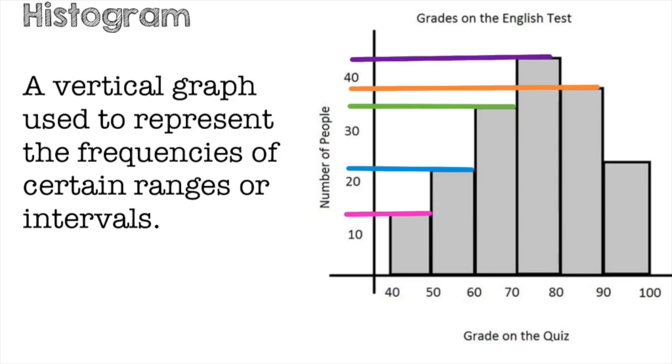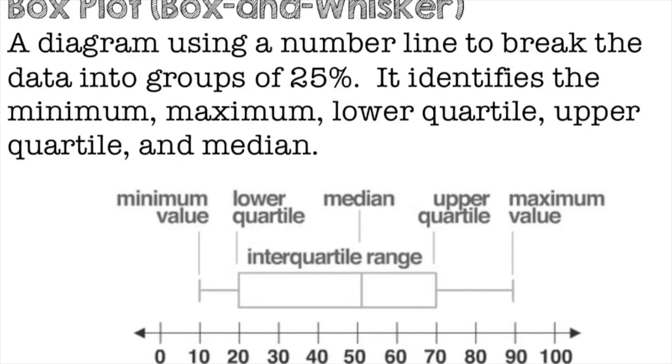This would be approximately 42 people that got between a 70 and an 80. Between 80 and 90 would be approximately 38%. And the last one from 90 to 100 would be approximately 25 people. That's how you read a histogram.